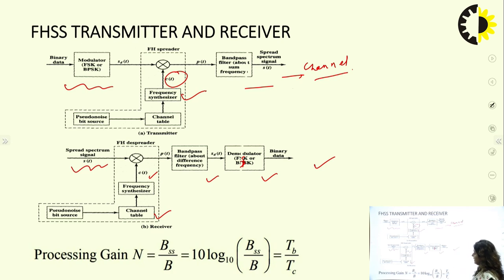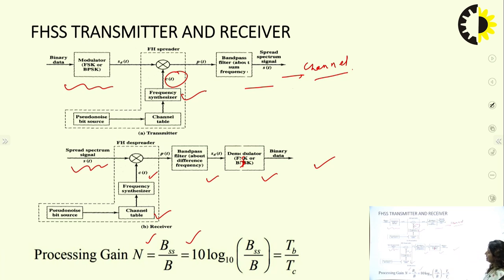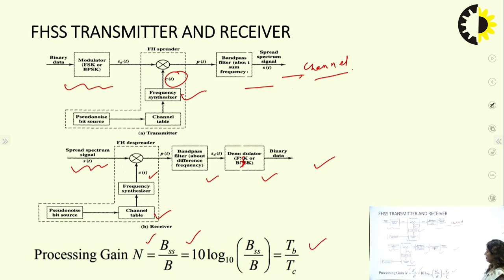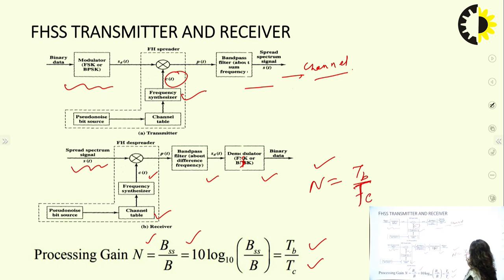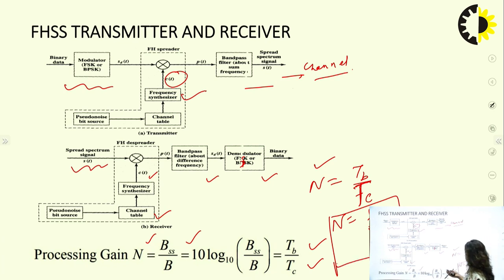Processing gain is defined as n, where n equals the spread spectrum bandwidth B_SS divided by the original bandwidth B: n = B_SS / B, or in dB: 10 log₁₀(B_SS / B). In terms of durations, it is defined as n = T_B / T_C (bit duration divided by chipping duration), or equivalently n = F_C / F_B (chipping rate divided by data rate).